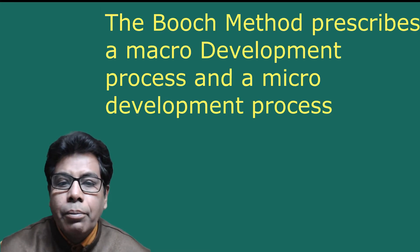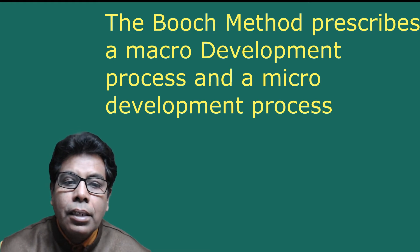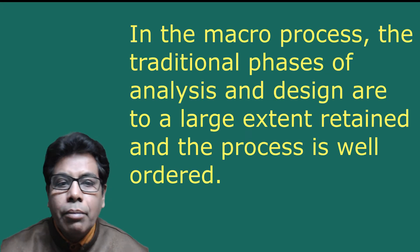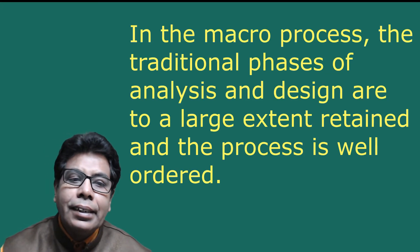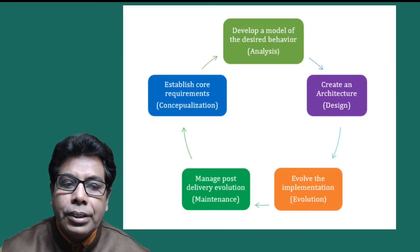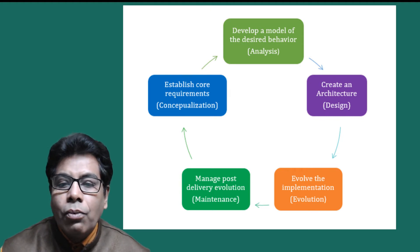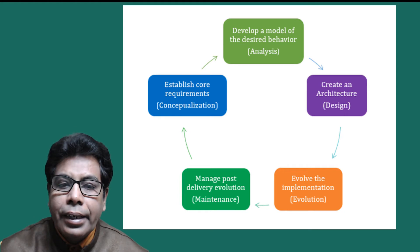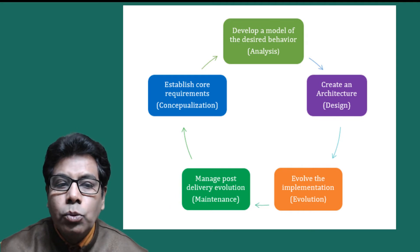The Booch method prescribes a macro development process and a micro development process. In the macro process, the traditional phases of analysis and design are to a large extent retained and the process is well-ordered. The macro process tends to track the following activities: establish core requirements for the software (conceptualization), develop a model of the system's desired behavior (analysis), create an architecture (design), evolve the implementation through successive refinement (evolution), and manage post-delivery evolution (maintenance).